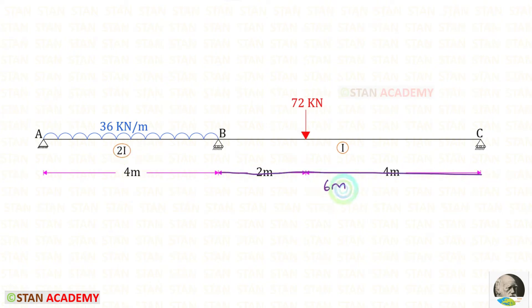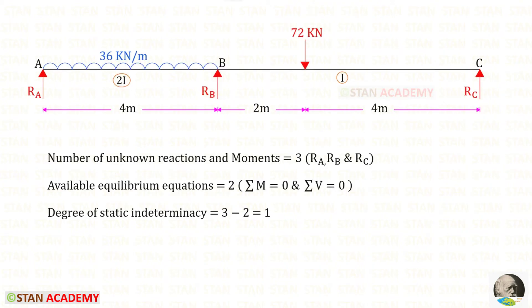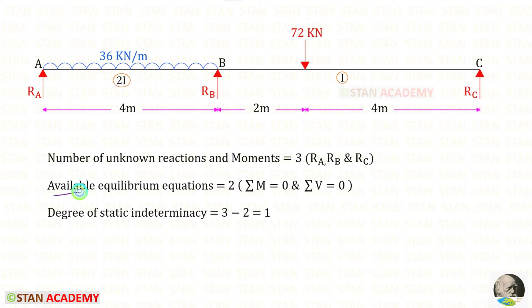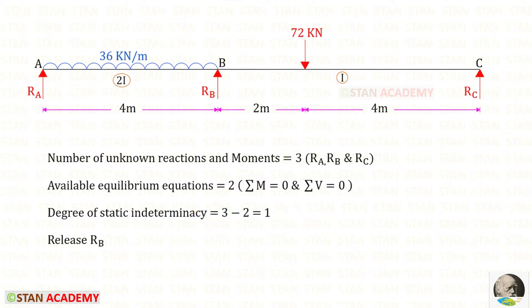Now let us find the degree of static indeterminacy. The number of unknown reactions are 3: the vertical reactions Ra, Rb, and Rc. The available equilibrium equations are 2. The degree of static indeterminacy is 3 minus 2, which equals 1. From this beam, let us release Rb.